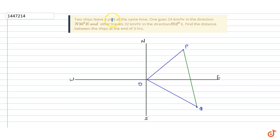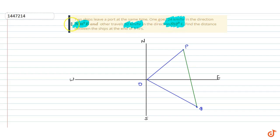The question given is: two ships leave port at the same time. One goes 24 km per hour in the direction north east 38 degrees, another travels 32 km per hour in the direction south east 52 degrees. We have to find the distance between the ships at the end of three hours. First ship is P and second ship is Q.